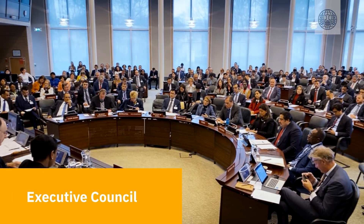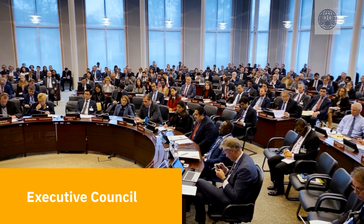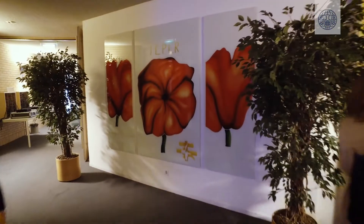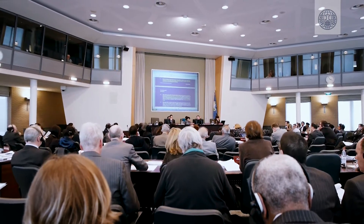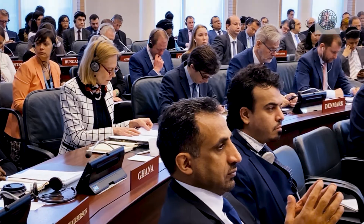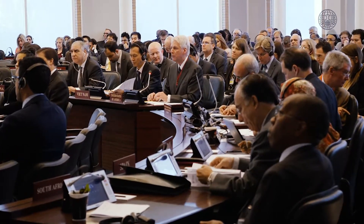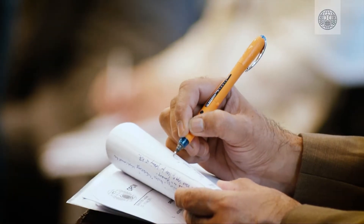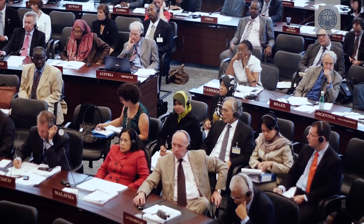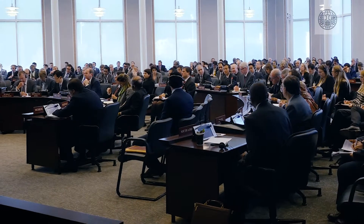The Executive Council is composed of 41 member states that are elected by the Conference of States Parties and rotate every two years. The Council meets at OPCW Headquarters at least three times per year. It supervises the activities of the Technical Secretariat and is responsible for promoting the effective implementation of and compliance with the Convention. It makes recommendations to the Conference and also has considerable power in implementing the Convention independently, including the ability to negotiate agreements for verification activities.